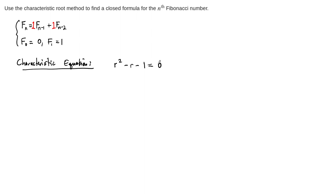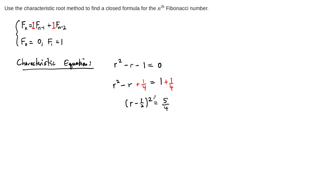Our job is to solve for these roots first, and then we'll be able to write down the solution, though we will have to do more work to find the actual coefficients. This is a quadratic equation; we can solve it by completing the square. We have r² − r = 1. Adding (1/2)² = 1/4 to both sides, the left-hand side factors as (r − 1/2)², and the right-hand side becomes 5/4. Taking the square root and moving over the 1/2, our roots are r = (1 ± √5) / 2. These are two distinct real roots, r_1 and r_2.